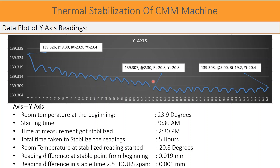The room temperature at the point where stabilized readings started was 20.8 degrees. The measurement variation from the beginning to the point where stable data started was 19 microns. Further, over stable reading time of 2.5 hours the variation was within 1 micron, and over 3.5 hours as well. Please note this measurement was carried out for a 1-meter Y-axis length.